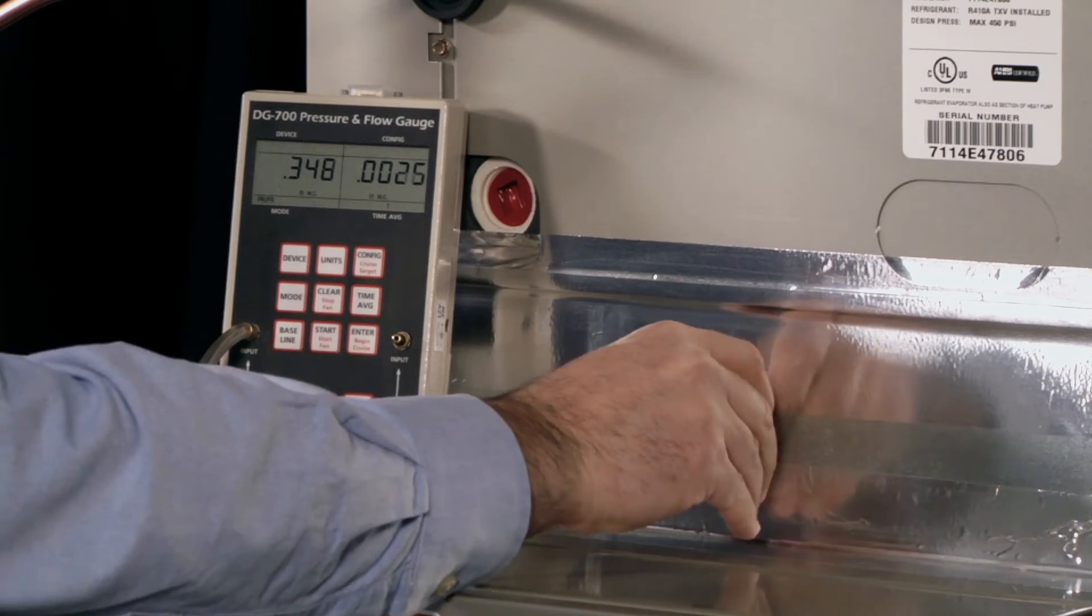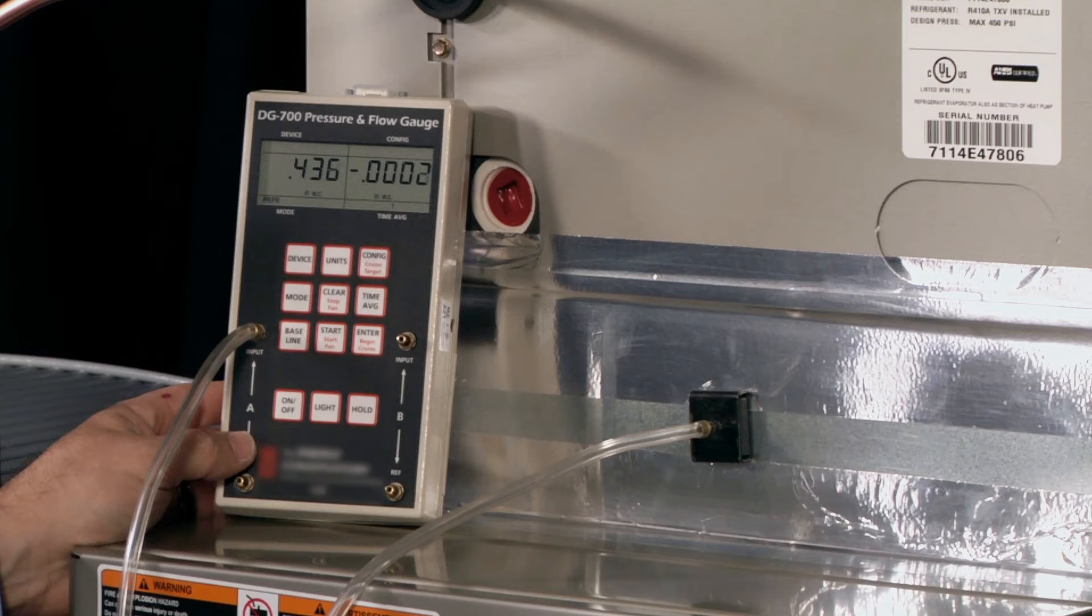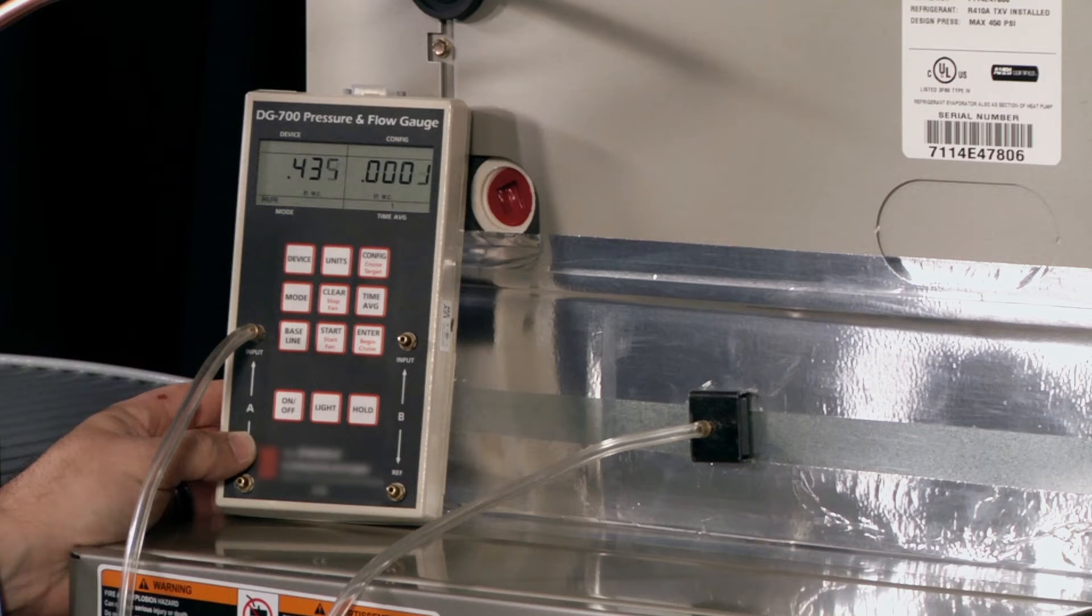He's going to position the probe so that it's pointing in the direction of the airflow, this way. Here we see the readout from the manometer. He gets a value slightly higher than 0.4 inches water column.